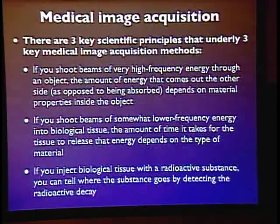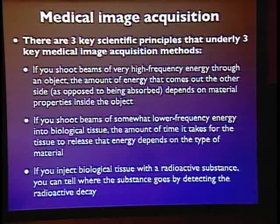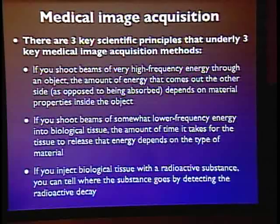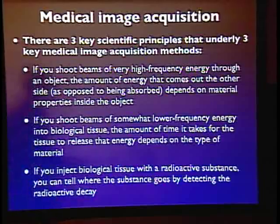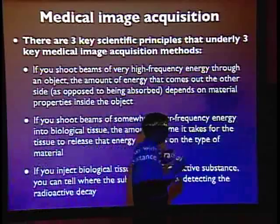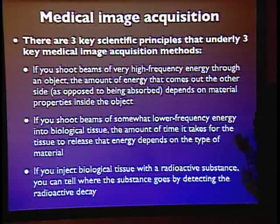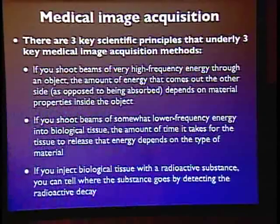Acquisition of medical imaging data is hugely, tremendously complicated in practice, and you could spend your entire career focusing on just one method. Paul Lauterbur and his colleagues won the Nobel Prize in Medicine — around 2004 — simply for inventing the magnetic resonance image. For our purposes, we can think of a few very simplified principles from physics that drive three different kinds of volumetric medical images.